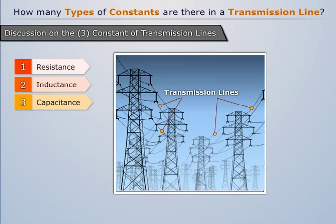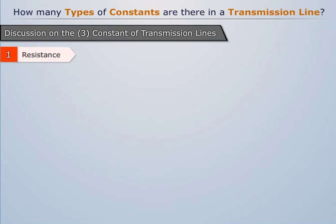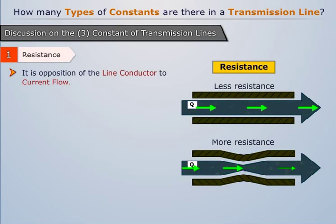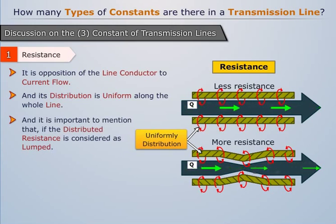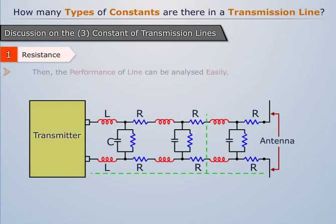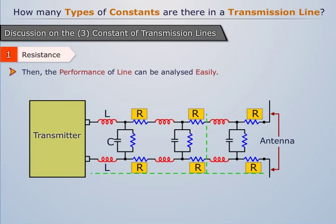The first constant variable we discuss is resistance. It's the opposition of the line conductor to current flow, and its distribution is uniform along the whole line. It is important to mention that if the distribution resistance is considered as lumped, then the performance of the line can be analyzed easily.